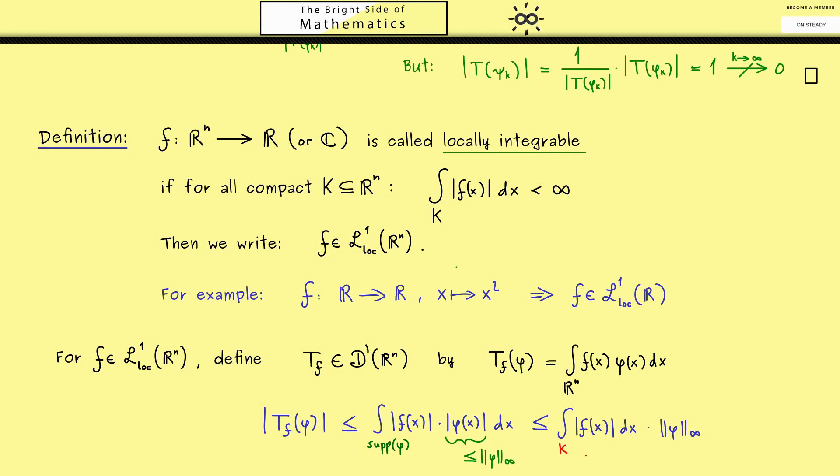Hence we have the integral of f in the absolute value times the supremum norm of phi. Of course we can integrate here over any compact set k, as long as it is a superset of the support of phi.